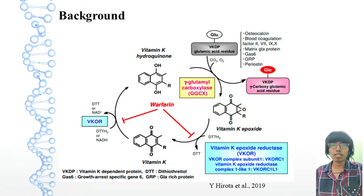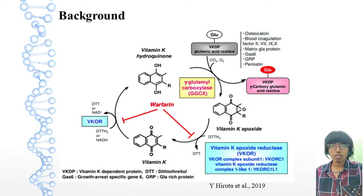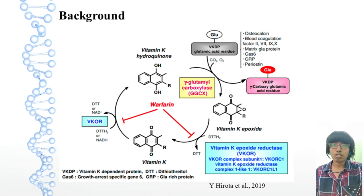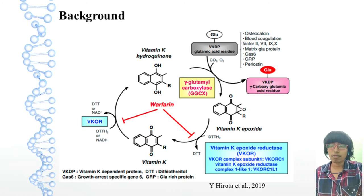Activity of both GGCX and vicar are regulated by calmolym. Recent evidence has revealed that GGCX is the only enzyme involved in GLA formation based on structure and function analysis of GGCX at the gene level, and animal studies showing that GGCX gene deficiency causes embryonic lethality from systemic bleeding.